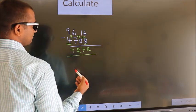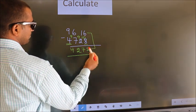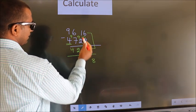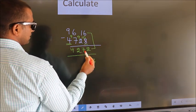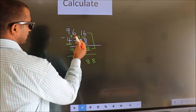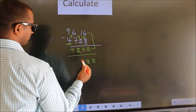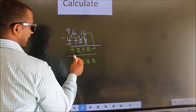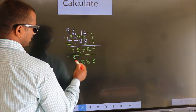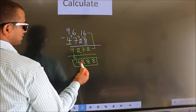Now add these two. 6 plus 2 is 8. 1 plus 7 is 8. 6 plus 2 is 8. First digit as it is, we write it down. So this is our answer.